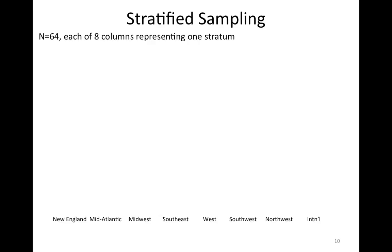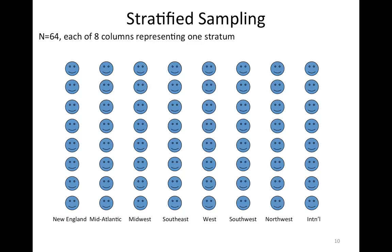Let's think about 64 people again. But now those 64 people are organized into eight strata — here I'm thinking of those as eight columns, these eight sets of people. Perhaps we're thinking of Wellesley students: eight who are from New England, eight from mid-Atlantic states, eight from the Midwest, eight who are international students, etc. Now if I did a simple random sample, it's possible that I would select these 16 students in the first two columns and I'd only have students from New England and mid-Atlantic states.